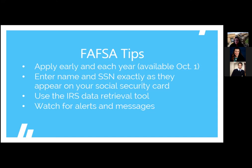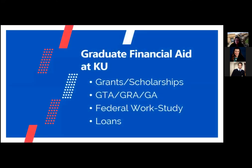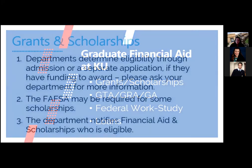After you file the FAFSA, there are four main areas of aid you may be eligible for. The nice ones are grants and scholarships, and then those three G's that Amanda was talking about, and work study. And then the ones that maybe aren't so nice are loans, which unfortunately every student is eligible for.